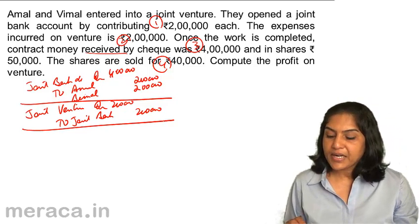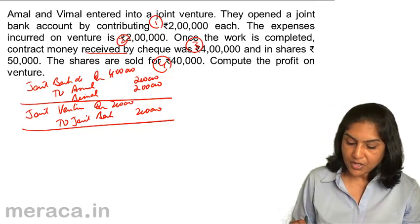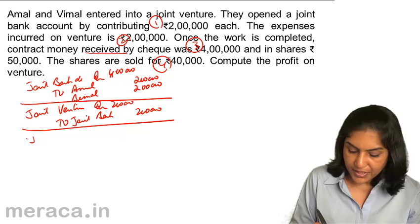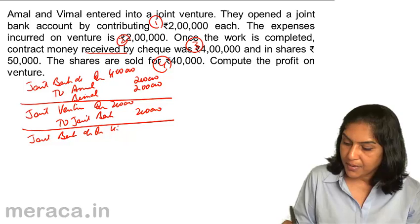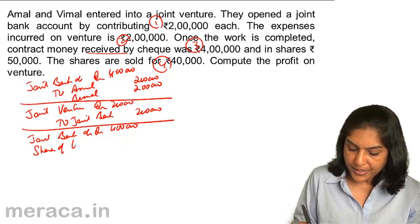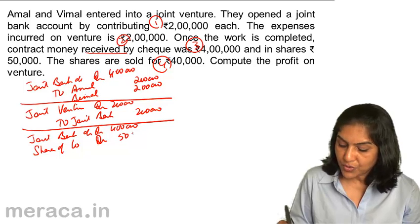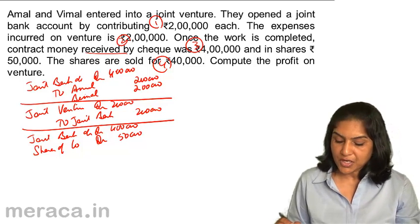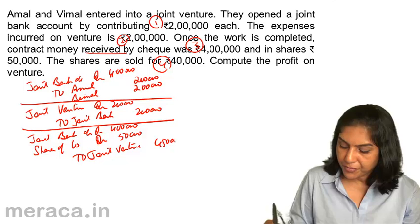Next, the contract money is received by check 4 lakh and shares 50,000. For receipt of contract money: joint bank account debit 4 lakh, and shares of company account debit 50,000 — that being the worth of the shares. So 4 lakh 50,000 is the contract value, to joint venture 4 lakh 50,000.